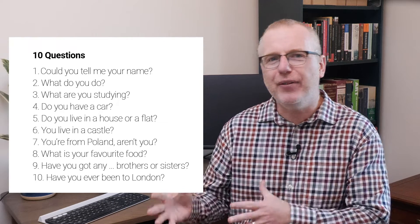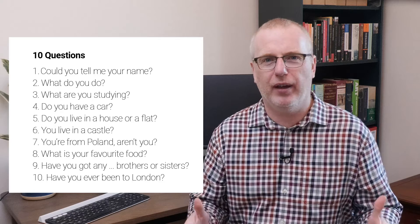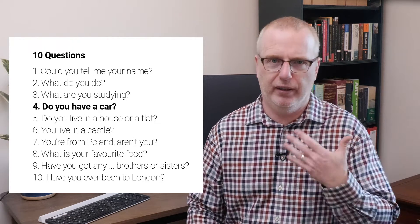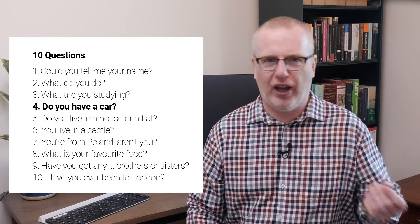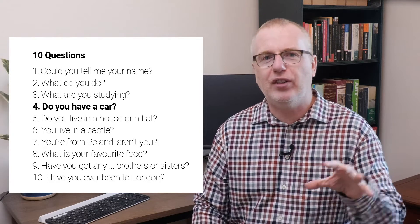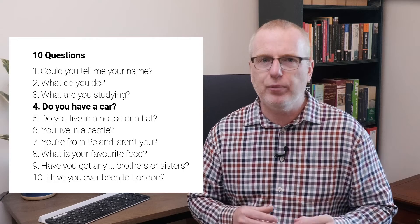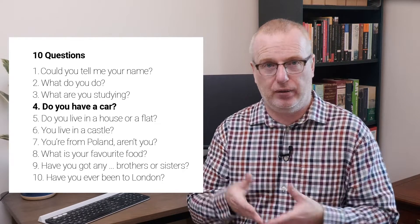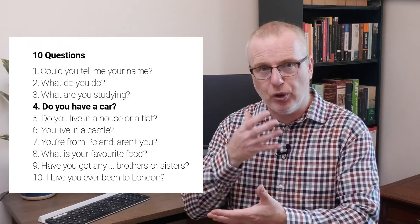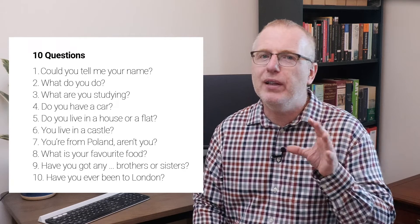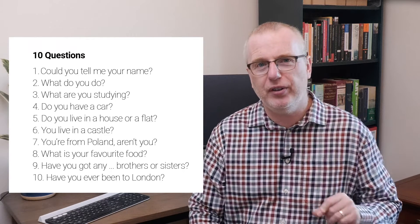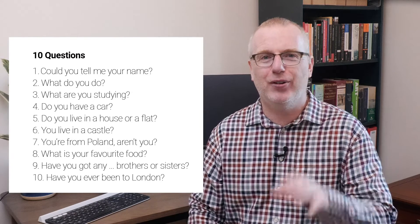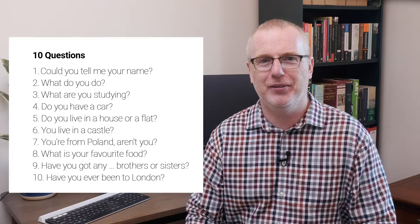I want you to look at these questions and think about question forms in English. How many different types of questions are there? For example, number four — do you have a car? — in natural spoken English, do you have a car? This is an example of a yes-no question, sometimes called an inversion because of the position of the subject, you, and auxiliary verb, do. Please look at the list of questions for 30 seconds, and then in the lesson chat, write how many different question forms you can find.